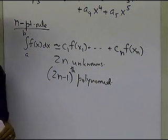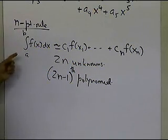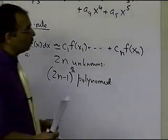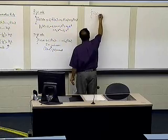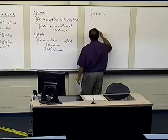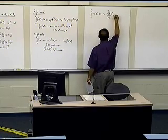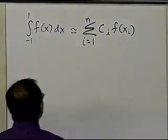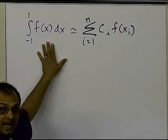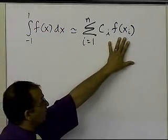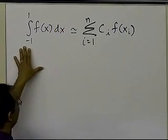Now, in the handbooks, they don't give you expressions for arbitrary a and b. Instead, they give you expressions for integrals going from minus 1 to plus 1. So in the handbook you will see expressions as: summation i equals 1 to n, c sub i times f of x sub i. The values of the coefficients and arguments — where you evaluate the function — are given for the special integral going from minus 1 to plus 1.